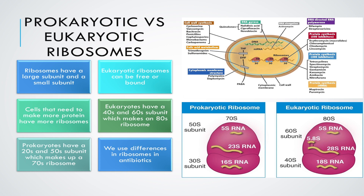This is really important for antibiotics. There are certain antibiotics that work on the 50s subunit. Some examples of antibiotics that work on the 50s subunit include azithromycin, erythromycin, clindamycin, linezolid, and chloramphenicol.